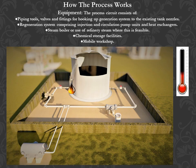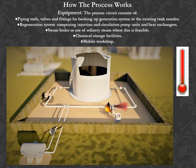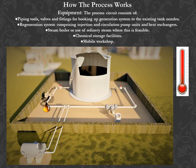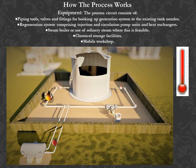How the process works — Equipment: The process circuit consists of piping tools, valves, fittings for hooking up the generation system to existing tank nozzles, a regeneration system comprising injection and circulation pump units and heat exchangers, a steam boiler (or use of refinery steam where feasible), chemical storage facilities, and a mobile workshop.